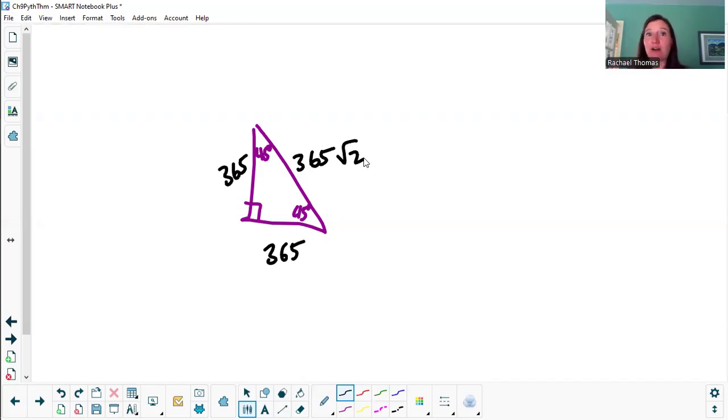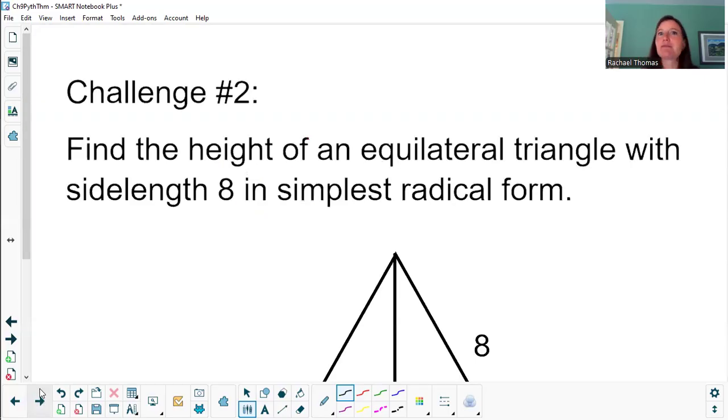I could type 365 times square root 2 in my calculator and get a decimal. And if I was going to Home Depot to buy a length of string of this length, that's the number I would tell them. But if I'm talking to another math person, or I'm writing my answer on the SATs, I'm going to write 365 times the square root of 2. And that's my final answer. It's actually a better form, believe it or not.